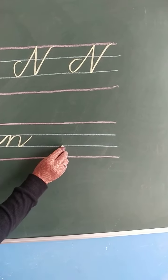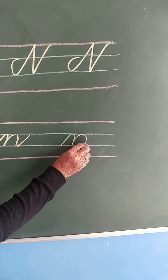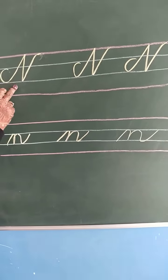Start from the third line. Go up, come down, and finish it with a curve. So in this way you will write cursive capital N and cursive small n.